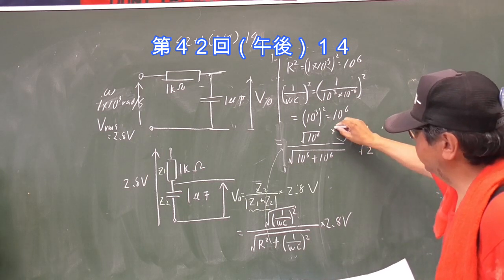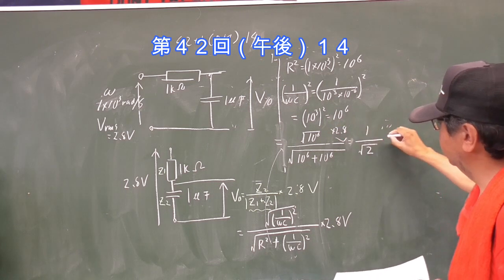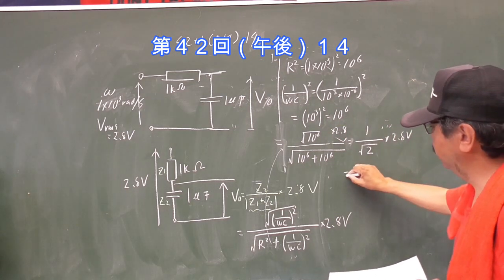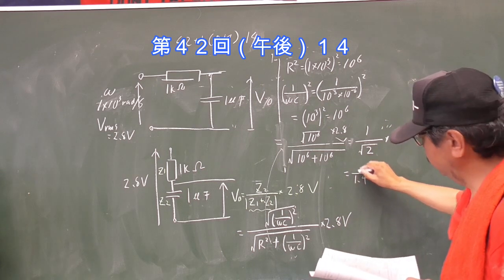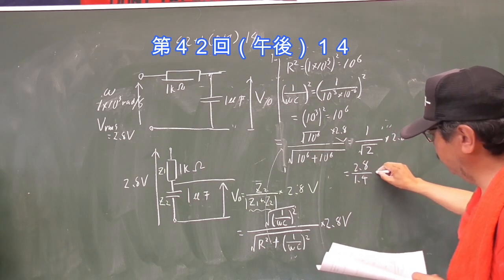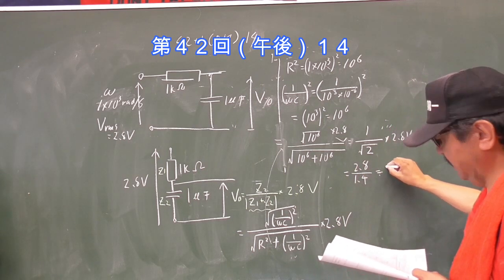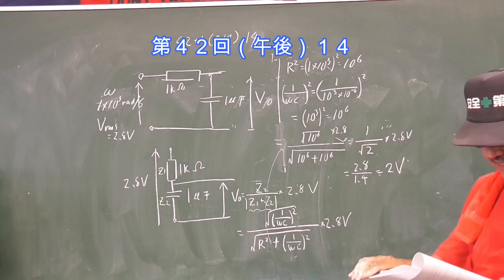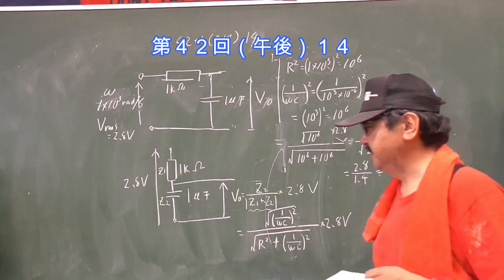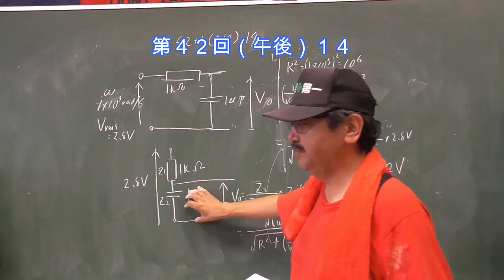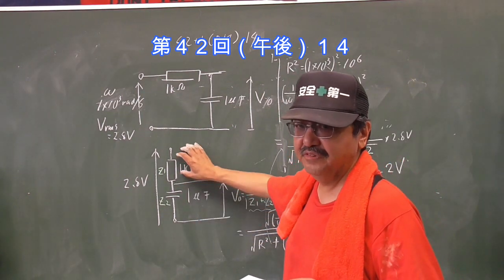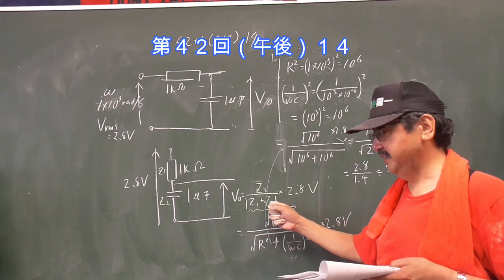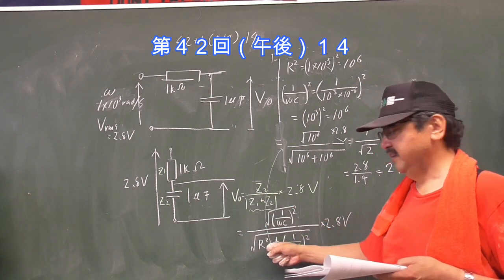かける2.8ボルト、イコール2.8/√2、これはほぼほぼ2ボルトですね。まあそんだけです。これは単に分圧しているんだと、ただ分圧する時の分母が両方とも抵抗だったら足し算になるけれど、片方がコンデンサーやコイルだったらベクトル量になると、2乗してルートする、それだけですね。まあそんだけ押さえとってもらったら解けます。ちょっと骨がある問題ですね。